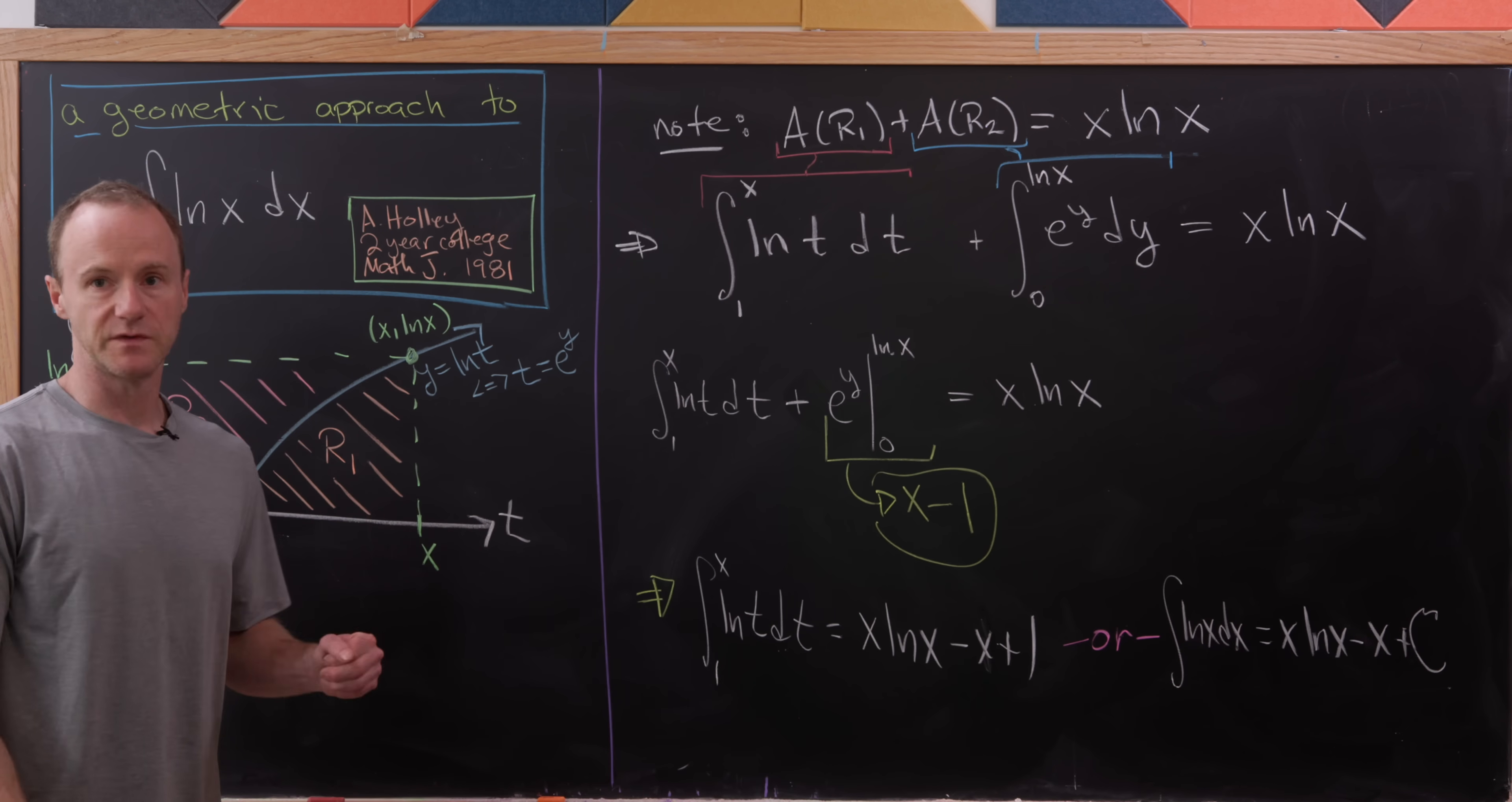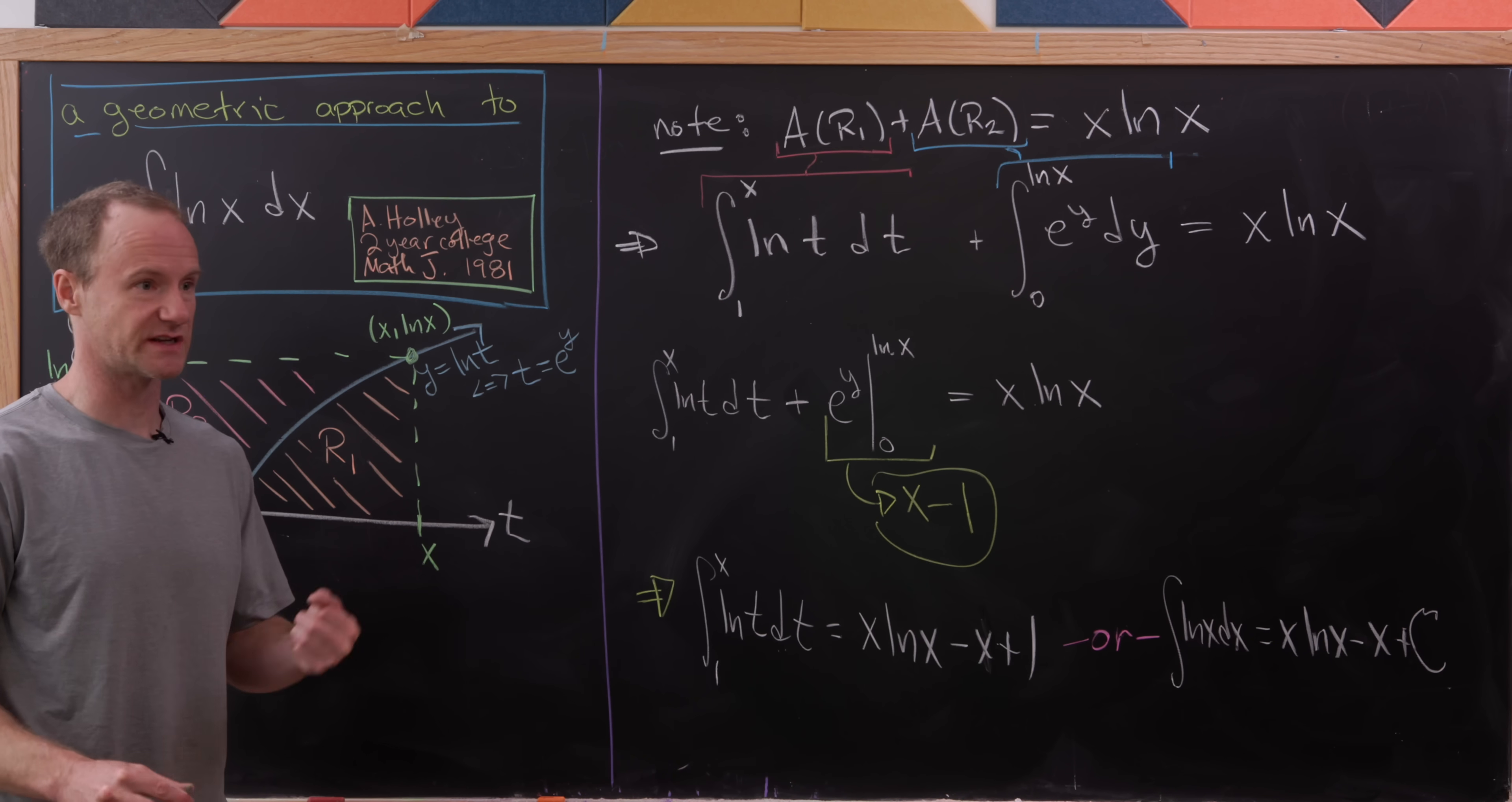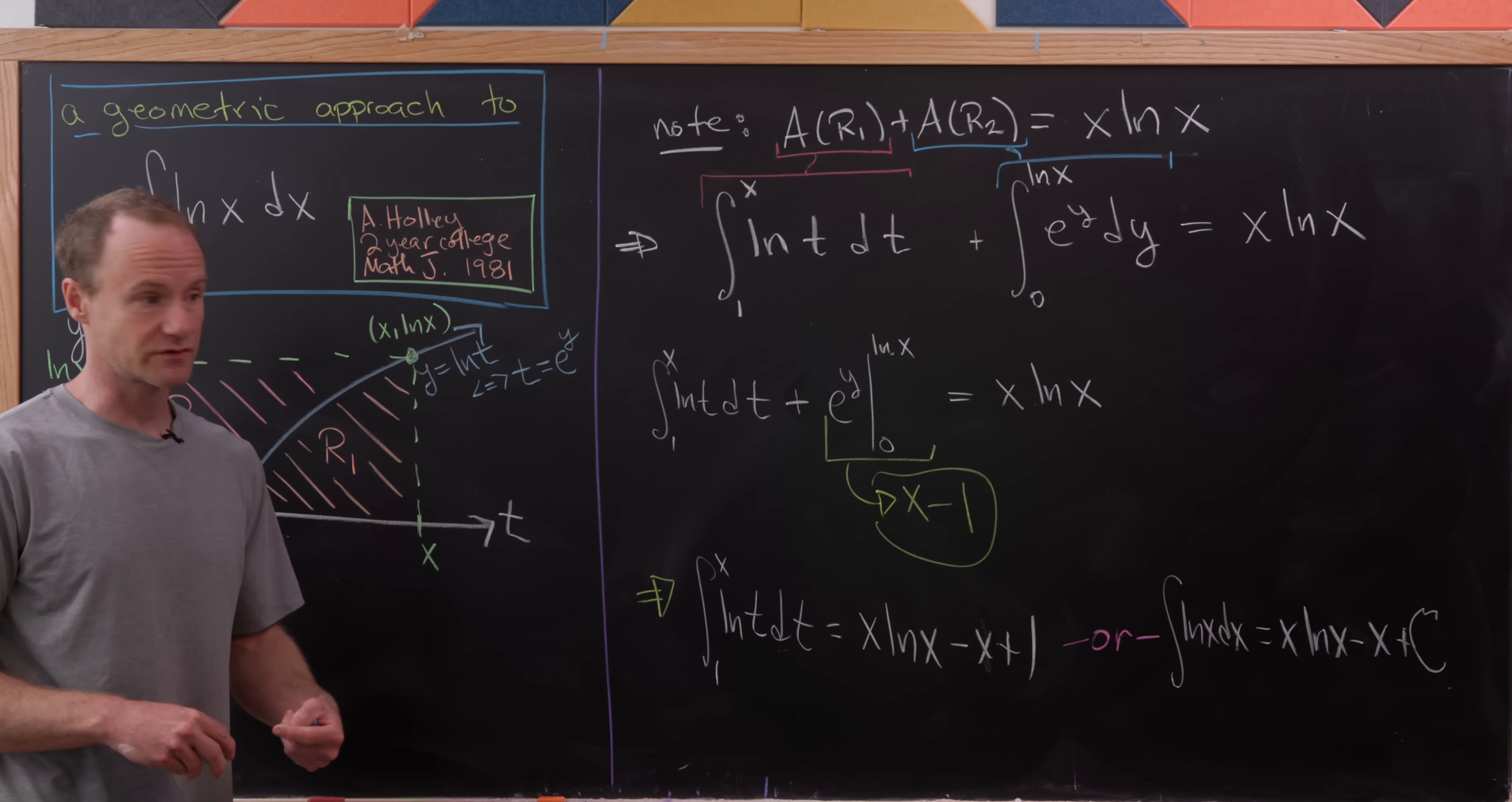So there we've had it. We didn't do any sort of integration by parts. Maybe actually, I should say we hid the integration by parts in a geometric argument. But that being said, this could be presented very easily before learning integration by parts. And we've landed at the antiderivative of this tricky function, the natural log function. And that's a good place to stop.